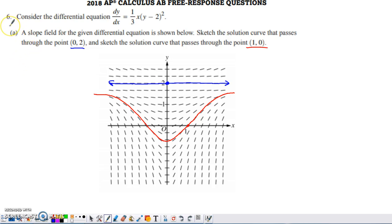Here's problem number six from the 2018 AP Calc AB exam. It gives you a differential equation, and what it presents us with in part A is a slope field, and it asks us to sketch two solution curves into that slope field.